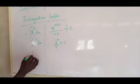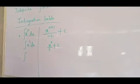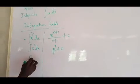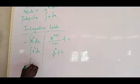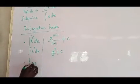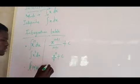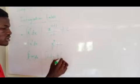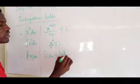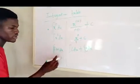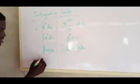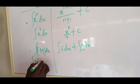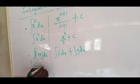If I have another one — let's say I have the integral of F plus G dx — this becomes the integral of F dx plus the integral of G dx. That's easy, you can always split them. That means if I have a question like the integral of X squared plus 5X dx, I can always split it.